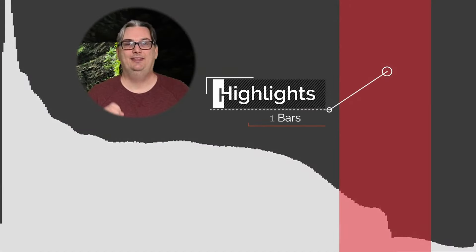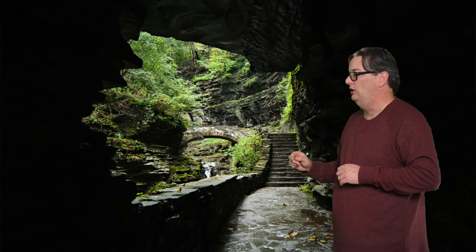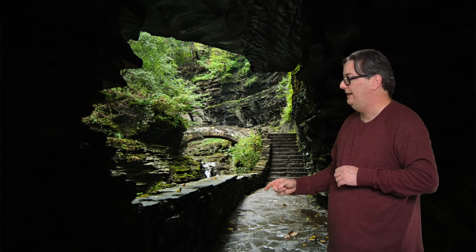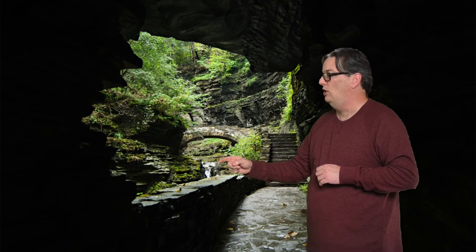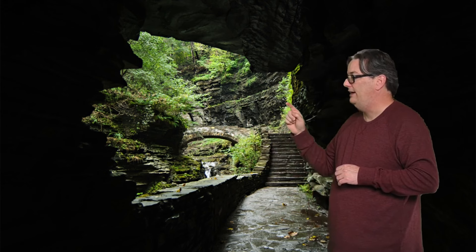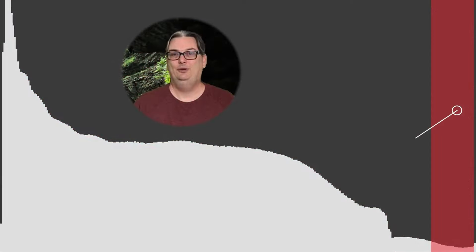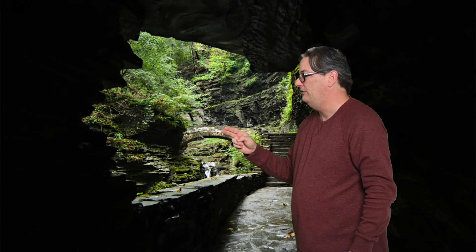The next zone is known as the highlights, and it also has 51 bars. Those are located along the path where it's much brighter — those would be highlights. We have some in the water, and some of the bricks on the bridge would also be considered highlights, as well as these brighter leaves. The final zone is known as the whites and it consists of 25 bars. The whites are basically a darker shade of pure white and can be found in the water here as well as some of the very bright bricks on the bridge.